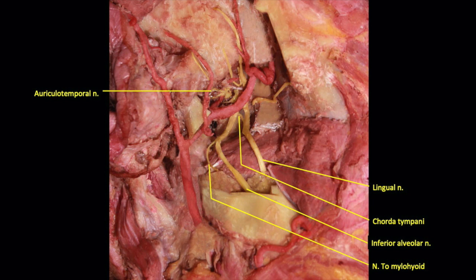Also note the otic ganglion. The otic ganglion will send postganglionic fibers to join the auriculotemporal nerve, and these will travel to the parotid gland to stimulate release of saliva. The auriculotemporal nerve exhibits a split, and through this split the middle meningeal artery will traverse to enter the cranium via the foramen spinosum.